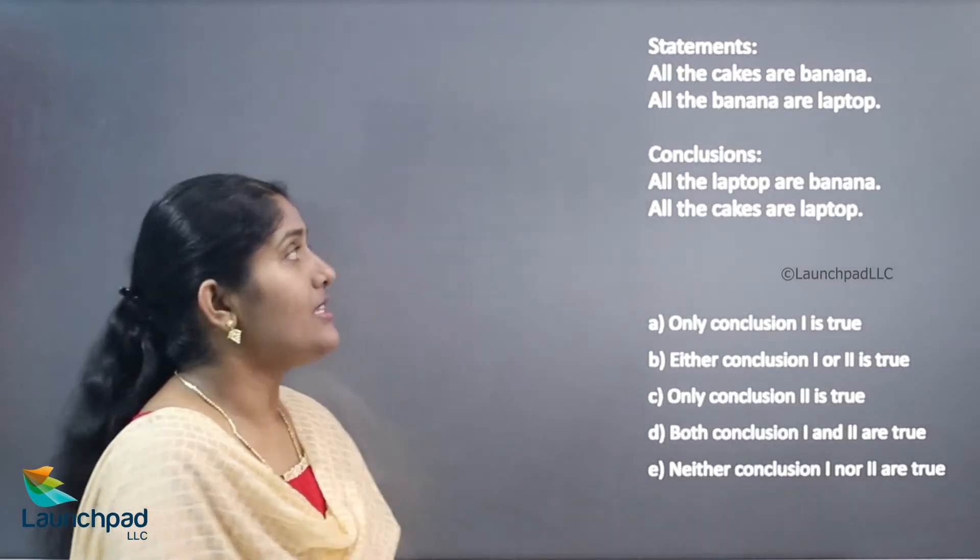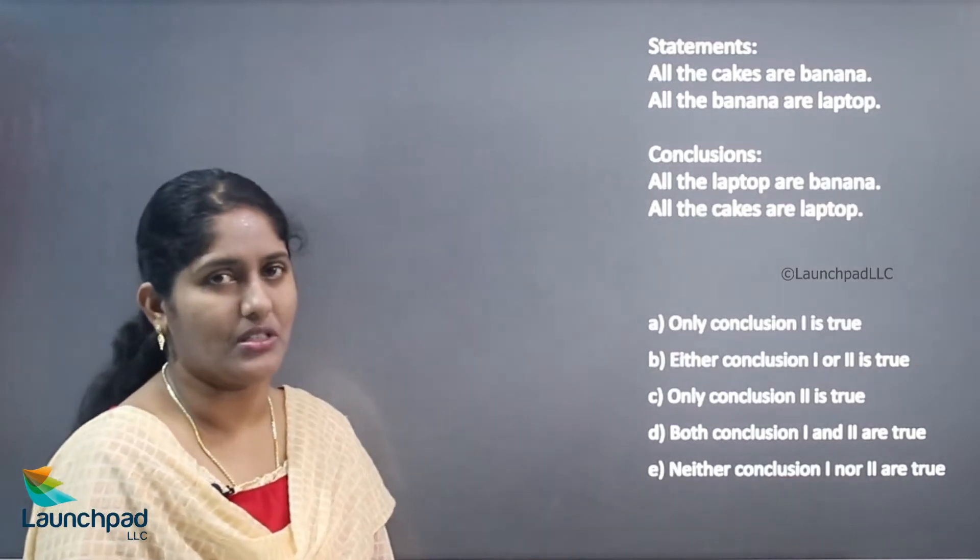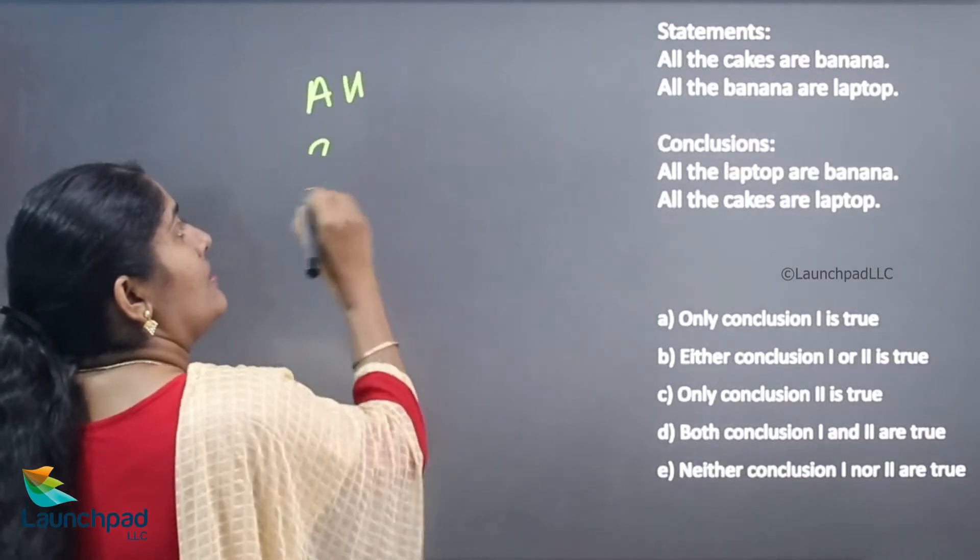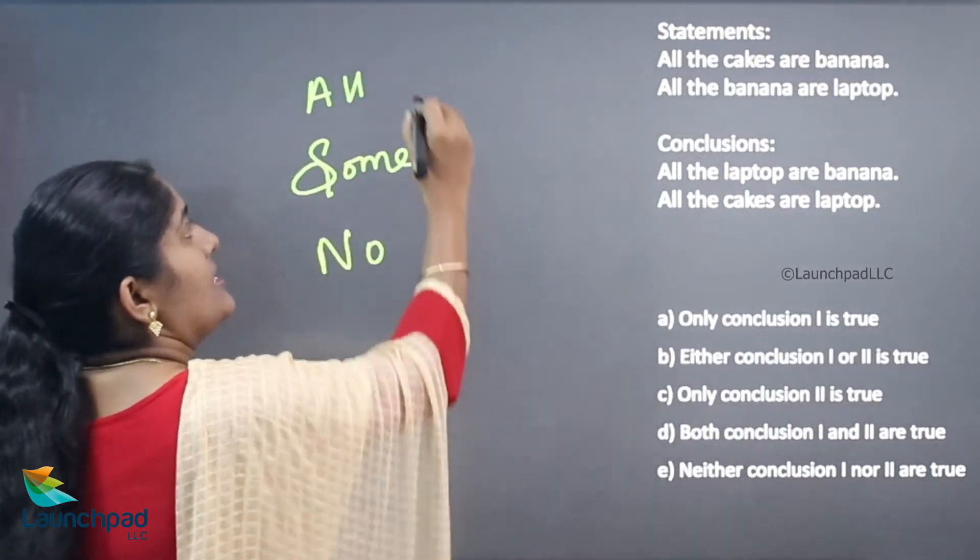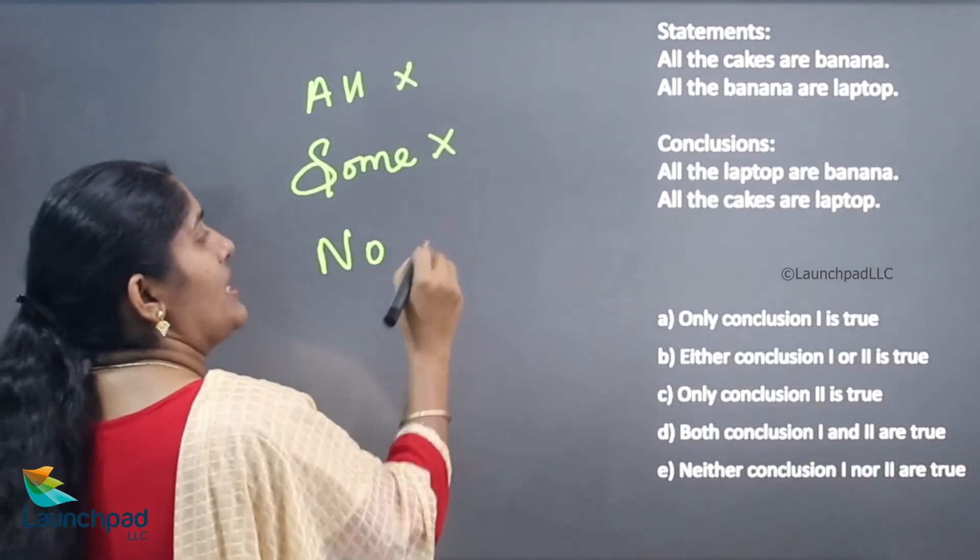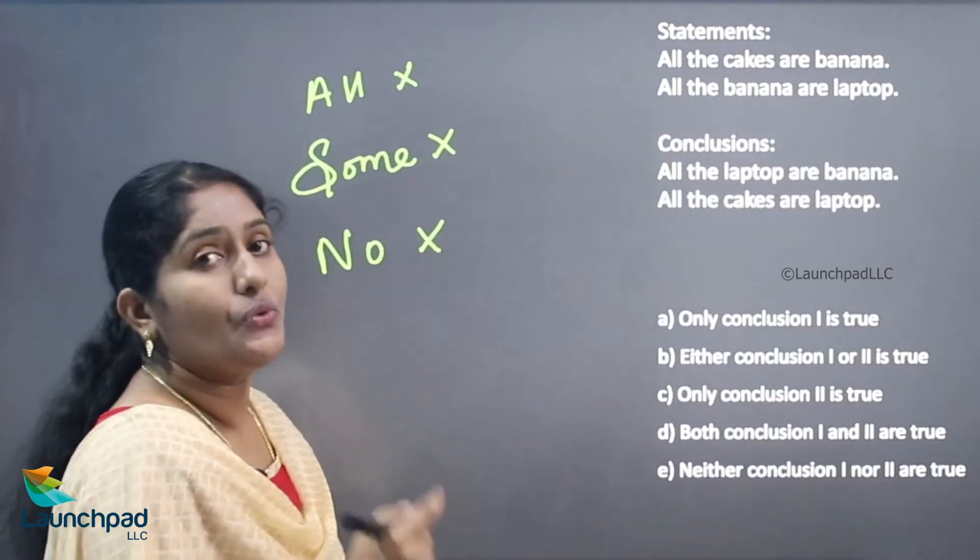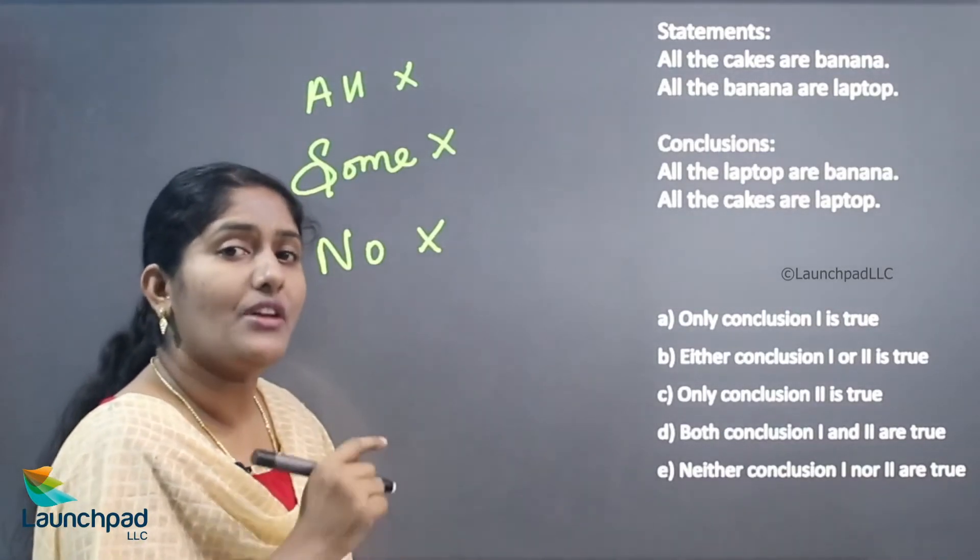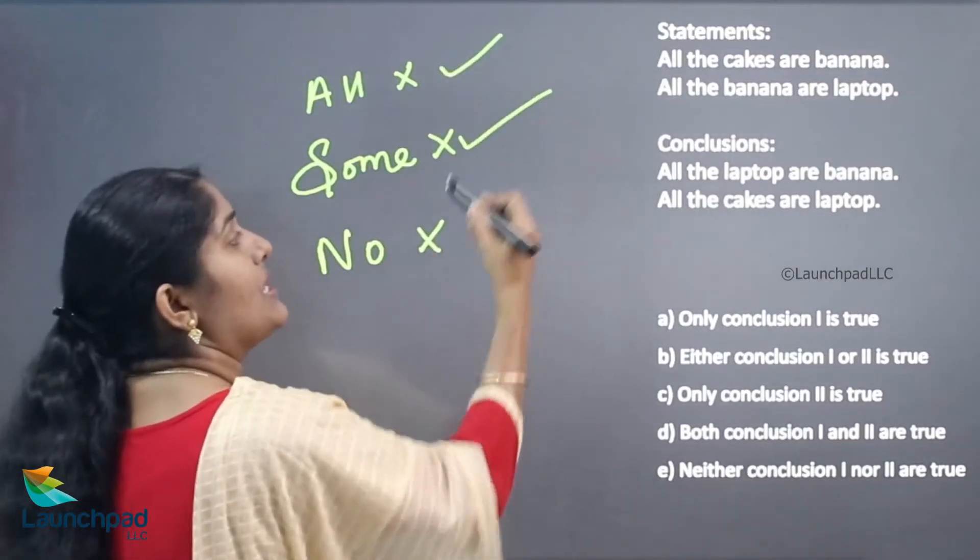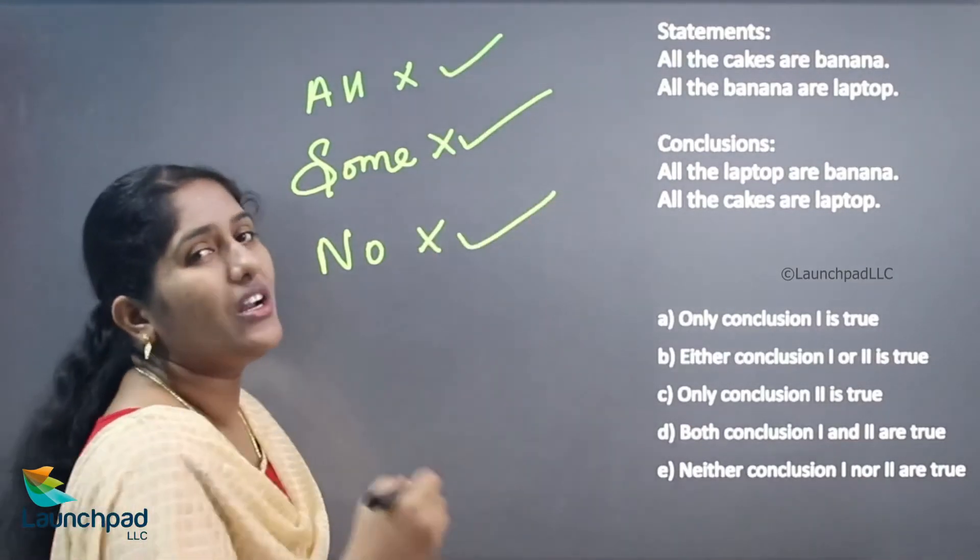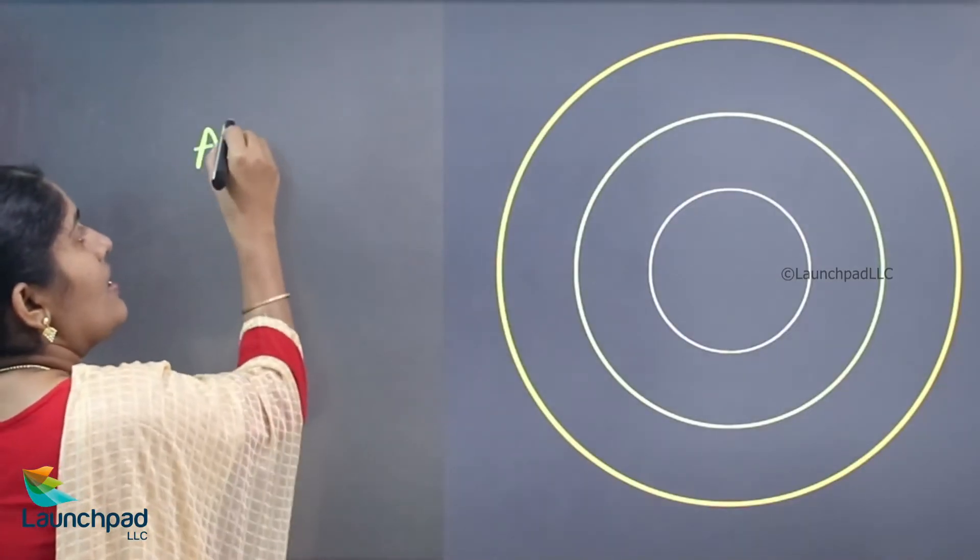The statement is started with three types of keywords: first one is all, some, and no. These are the three keywords which are very important and are used to start the statements. So we want to learn how we can draw the diagram for the statement, whether it starts with all, if it starts with some, and if it is with no.